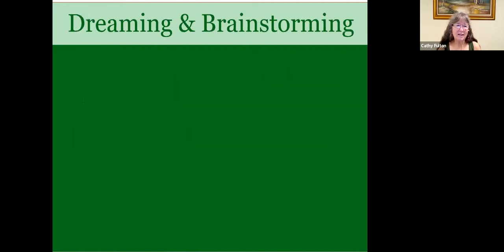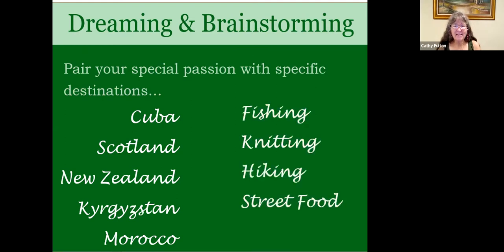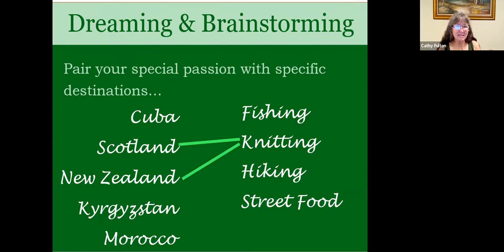First, of course, is dreaming and brainstorming — that's how we all start our trips. You will find that not every place you want to visit will be appropriate to your chosen theme. I did meet knitters in Sri Lanka, for example, but they're kind of rare. So since that was my theme, I went to northern Europe and Scotland. One way to do this is to pull out your bucket list, pick out places you really want to go, make a list of your special interests, and do some matching up.